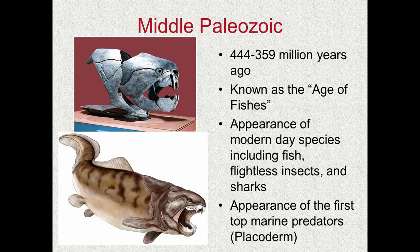Let's move on to the Middle Paleozoic. This is the time that stretches from 444 to 359 million years ago. This time period is known as the Age of Fishes — guess what the dominant life was? That's right, fish. We also at this time see the appearance of some modern species still with us today, including fish, flightless insects like spiders, and sharks. They get their start back in the Middle Paleozoic. We also see the appearance of our first large tertiary consumers, the placoderms, which means armored fish.